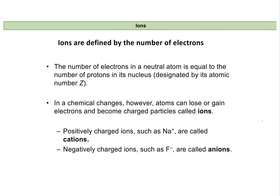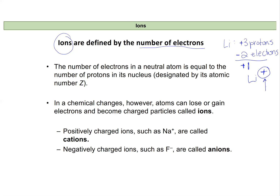Sometimes we have an imbalance in the number of protons and electrons — these are ions. If the number of protons changed relative to the number of electrons, we would be changing the element itself; but when the electron number changes, we change the ion. For lithium with 3 protons and only 2 electrons, we have a +3 charge from protons and a -2 charge from electrons, leaving an overall charge of +1. We track that in the upper right corner of the element symbol.